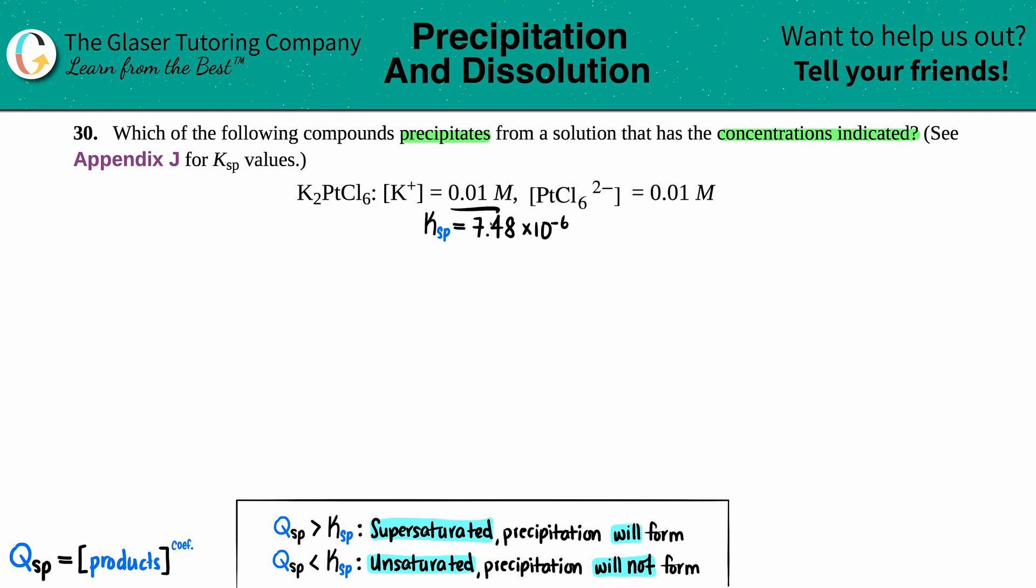The complex ion PtCl6 2- is at 0.01 molarity. We want to know if this compound will form a precipitate, meaning will there be any leftover solid in our solution.